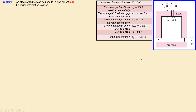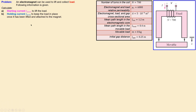Now, what are the questions? We need to calculate the starting current to lift the load up — that is the first question. The second one is the holding current, which is the value required to keep the load in place once it has been lifted and attached to the electromagnet. So first we calculate the starting current and then the holding current. Since this is all about current, we need to work towards the value of current applied by the source.